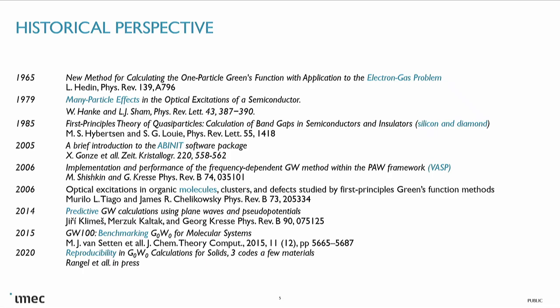Then it took another 10 years and there was a paper called 'predictive GW calculations' — so apparently everything before that paper was not predictive. Only about that much later did people start to wonder about what is the accuracy and precision of GW. There's a famous statement in solid-state theory that everything works for silicon. You can make a completely terrible potential and it still gives you the right lattice constant for silicon. Same goes for GW — any approximation, any plasma pole model, it will work for silicon. Which means everything that works for silicon does not necessarily work for everything else. If you go away from silicon, everything breaks down.